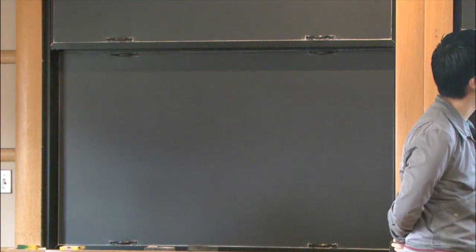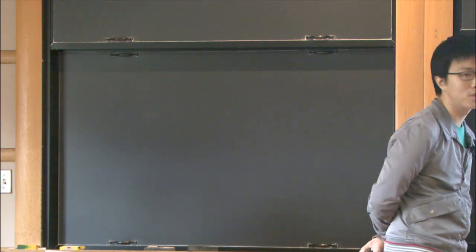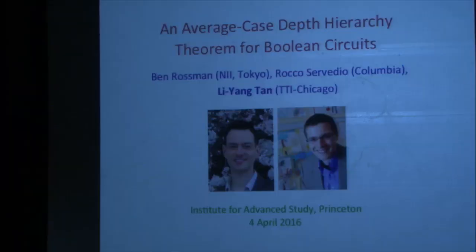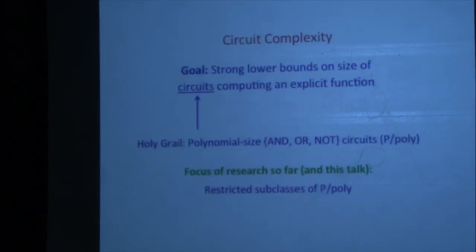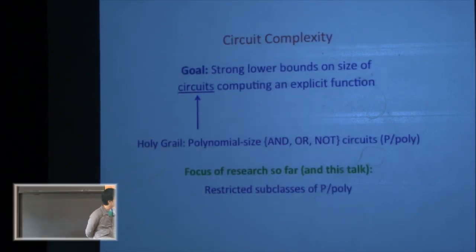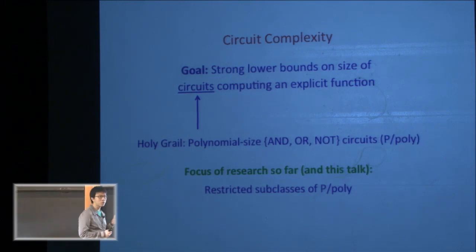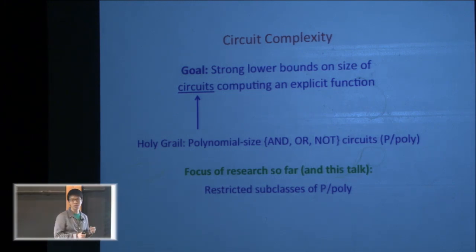Thanks for coming to my talk. I'm going to speak about the average k-step hierarchy theorem for Boolean circuits. This is joint work with Ben Rossman and Rocco Servedio. This is a talk in circuit complexity. The goal here is that we want strong lower bounds on the size of circuits computing an explicit function.